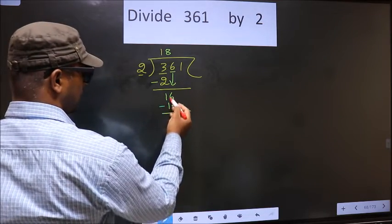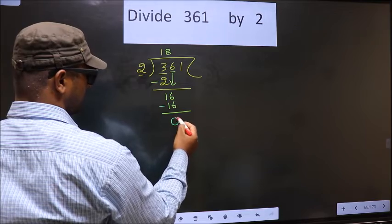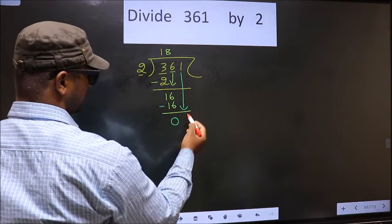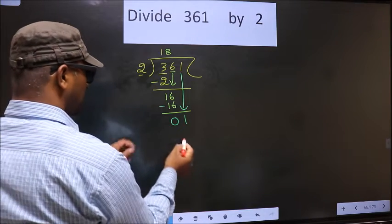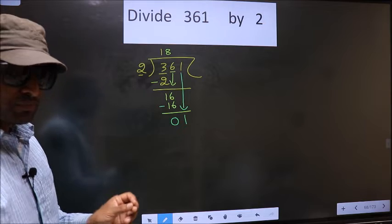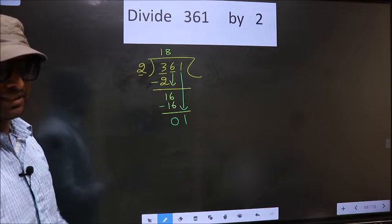Now you subtract. 16 minus 16, 0. Now you bring down the beside number. That is 1 down. This is where the mistake happens. And the mistake is this.